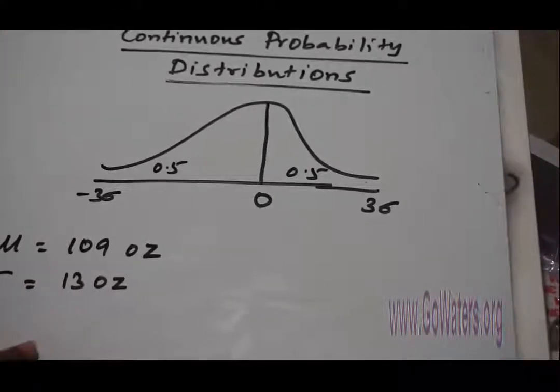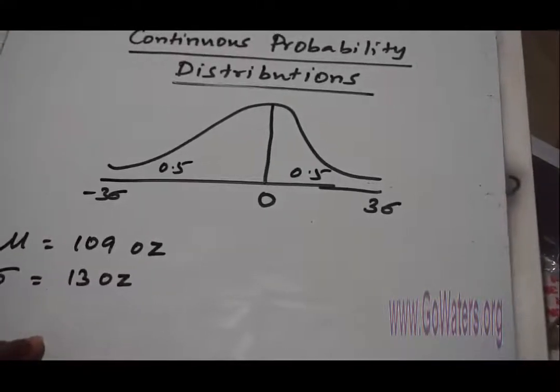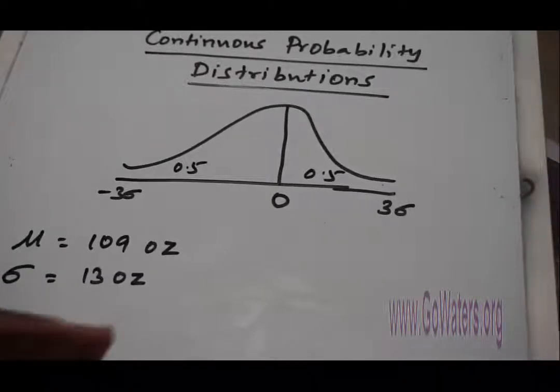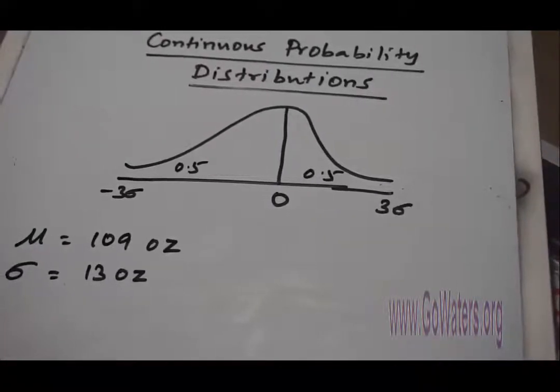Now you have to calculate the probability: what is the chance that a child is born with 141 ounces or heavier?